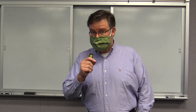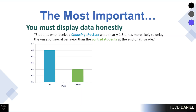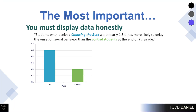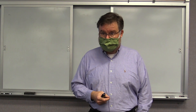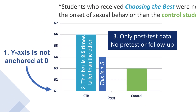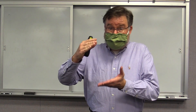The first thing I noticed was they had only one bit of evidence — a bar chart in which they say that students who received Choosing the Best were nearly 1.5 times more likely to delay the onset of sexual behavior than the control students at the end of ninth grade. That looks like a pretty impressive outcome if you look at the height difference between those bars — it's pretty dramatic. But I immediately recognized a few things about this display of data that made me suspicious. Number one, the y-axis is not anchored at zero. When we have percentages, which run from zero to 100, but we start in the middle of the range, that can magnify the size of the difference between the bars.